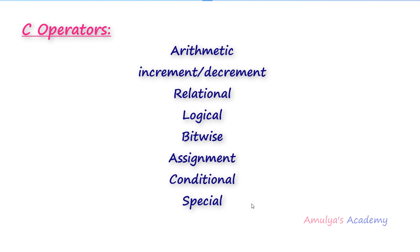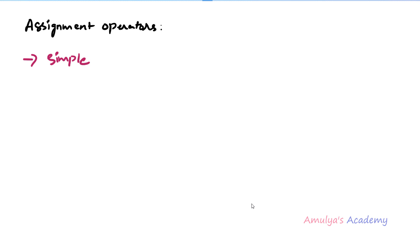Hello guys and welcome to C programming tutorials by Amulyas Academy. We were discussing about operators in C and today in this tutorial we will discuss about assignment operators. Assignment operators are used to assign values to variables and we have two types: simple assignment operator and compound assignment operator.